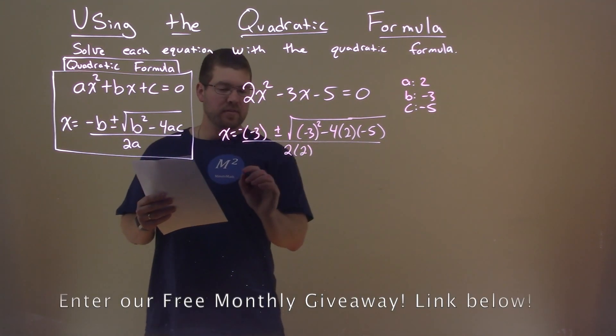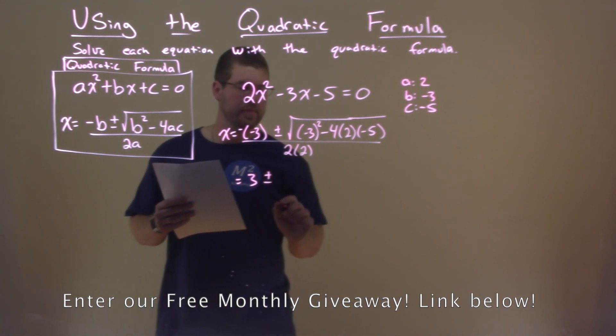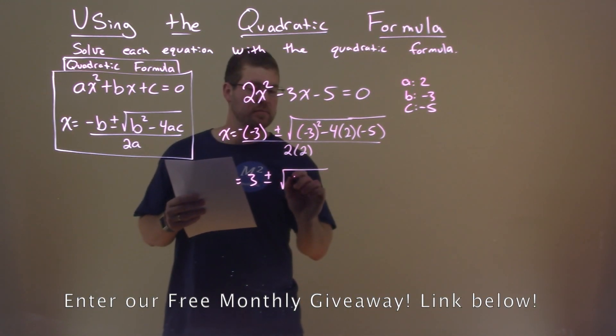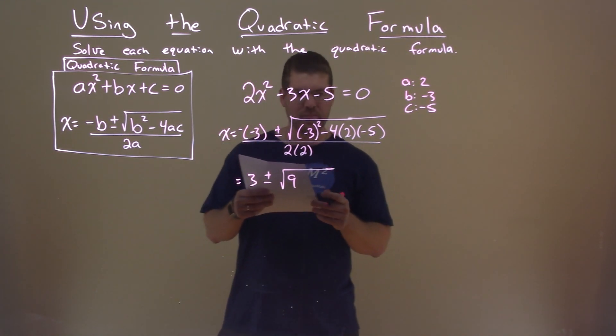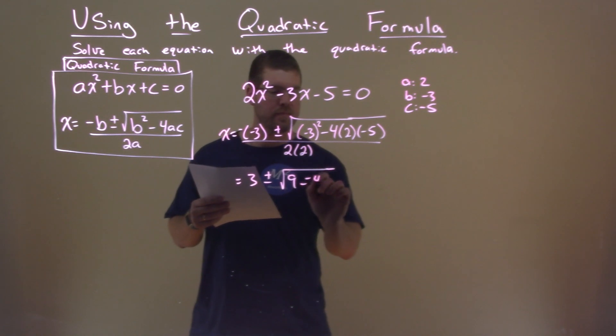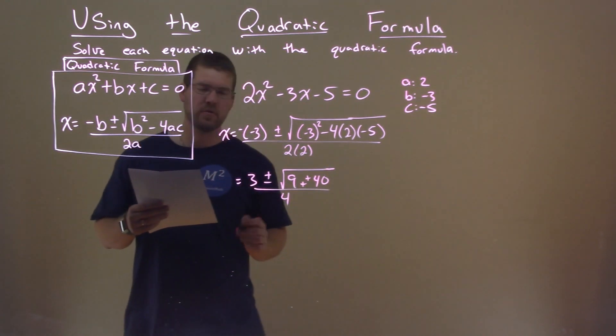Now we just have to simplify. Negative negative 3 is a positive 3. Square root, negative 3 squared is 9. And then 4 times 2 times negative 5 is negative 40. We have minus a negative 40, so we add a positive. That's all divided by 4, 2 times 2.